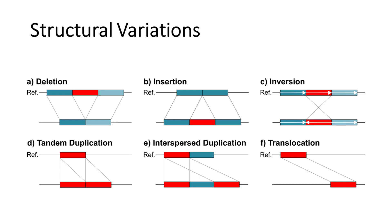Structural variations include deletions, duplications, inversions, insertions, and translocations. Deletion is a type of mutation involving the loss of genetic material.